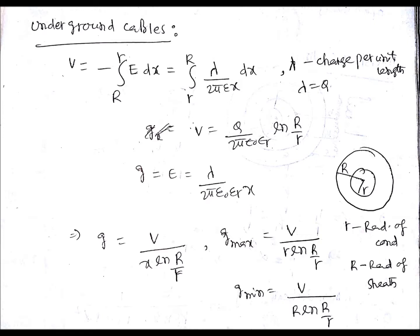After transmission lines and string efficiency, coming to underground cables. In case of underground cables, the voltage will be given by V = -∫(r to R) E dx. This is a general formula using electric field intensity to get the potential.